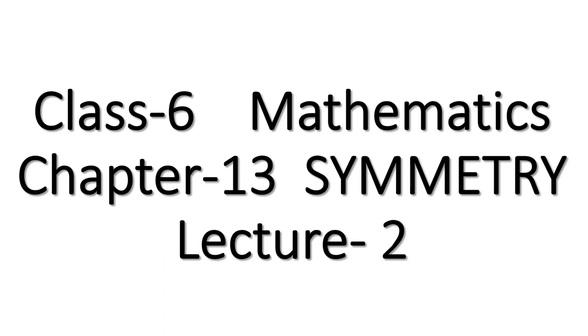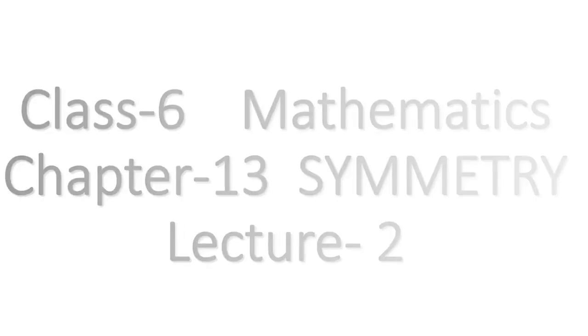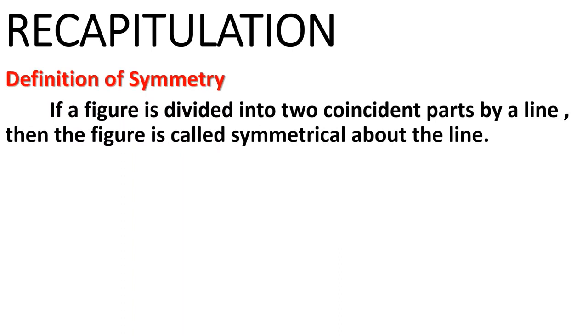Hello students, welcome to Class 6 Mathematics, Chapter 13 Symmetry, Lecture Number 2. First we will recapitulate what we covered in Lecture 1: the definition of symmetry. If a figure is divided into two coincident parts by a line, the figure is called symmetrical about that line — if half part overlaps the other half part, the figure is symmetrical.